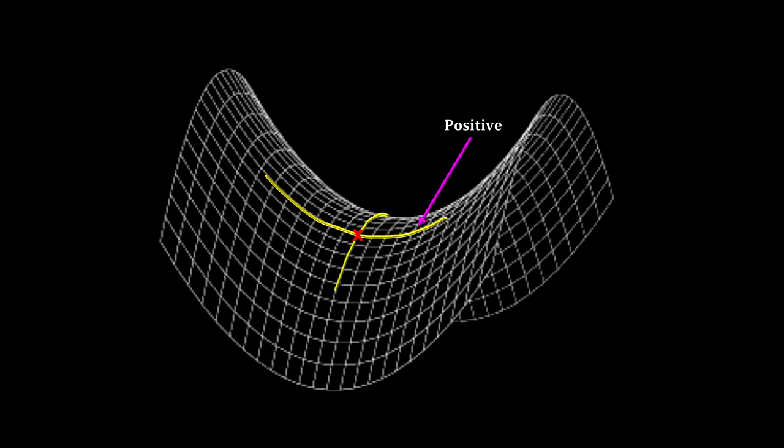In one direction, we have a positive curvature. In another, it is negative.